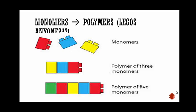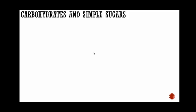Let's talk about monomers and polymers. Monomers — you can compare these to Legos — with mono meaning one. Here we have three separate Legos that are not bonded together, and here we have three Legos that have been bonded together. This is what we call a polymer because there's more than one. Down here we have five monomers — that's a polymer of five monomers. So poly meaning many, mono meaning one.